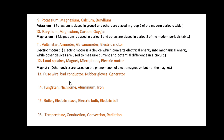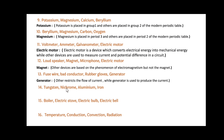Next: Fuse Wire, Bad Conductor, Rubber Gloves and Generator. Friends, here Generator is the odd one out. Because the others restrict the flow of current, while Generator is used to produce current.